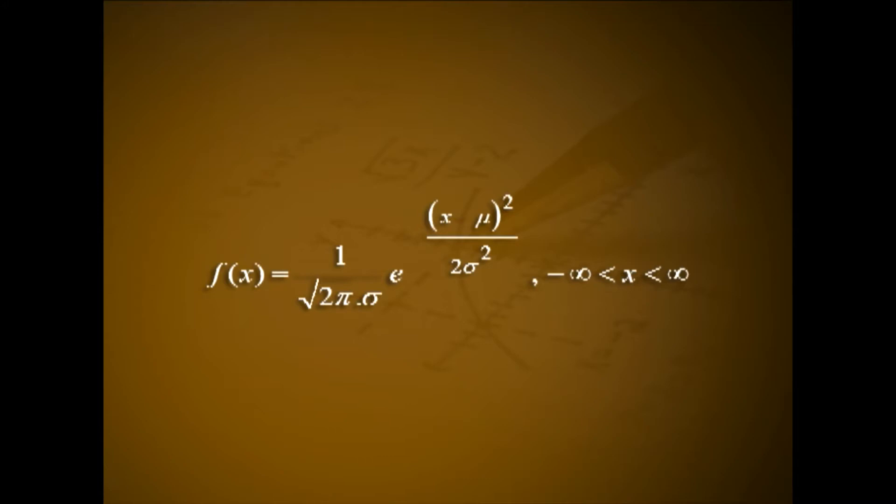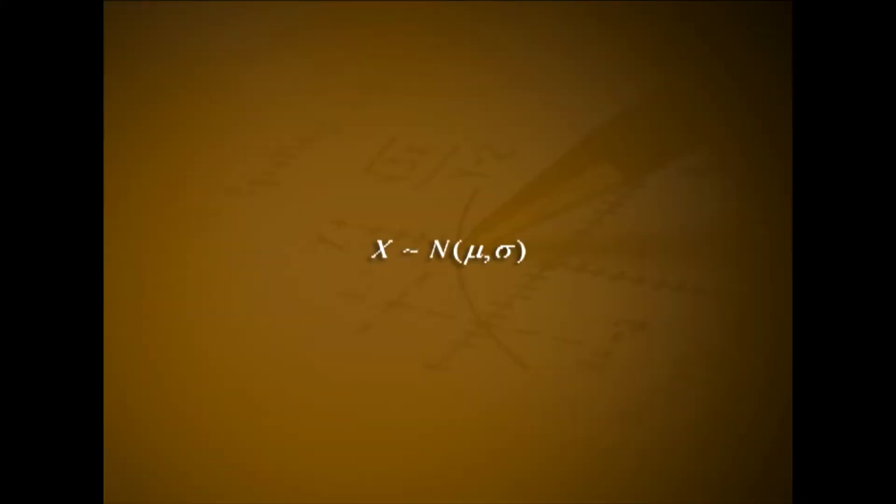Normal distribution: a continuous random variable x with pdf f(x) = 1 / (√(2π) · σ) · e^(-(x-μ)² / (2σ²)) for -∞ < x < ∞ is said to follow normal distribution with parameters μ and σ. This is denoted by x ~ N(μ, σ). The shape of the normal curve is bell-shaped and symmetrical about the mean. For x ~ N(μ, σ), μ is the mean and σ is the standard deviation.